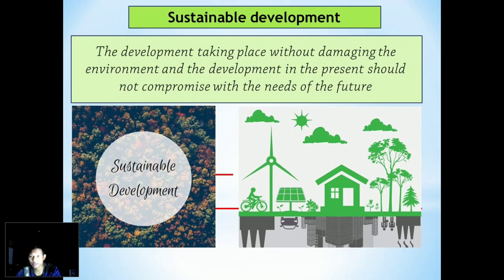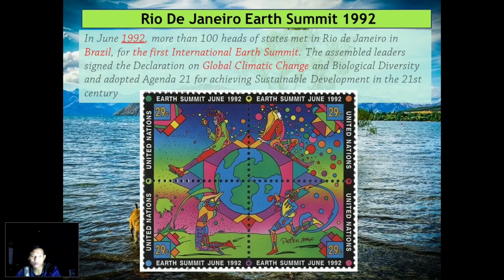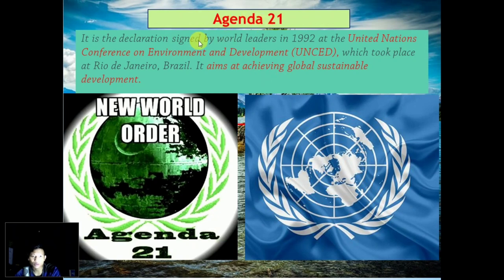Sustainable development is development taking place without damaging the environment, where development in the present should not compromise the needs of the future. Any development done today should not affect the future — that is sustainable development. In June 1992, more than 100 heads of state met in Rio de Janeiro, Brazil, for the first International Earth Summit. The assembled leaders signed a declaration on global climatic change and biodiversity and adopted Agenda 21. Agenda 21 is a declaration signed by world leaders in 1992 at the United Nations Conference on Environment and Development at Rio de Janeiro, Brazil, aiming at achieving global sustainable development.